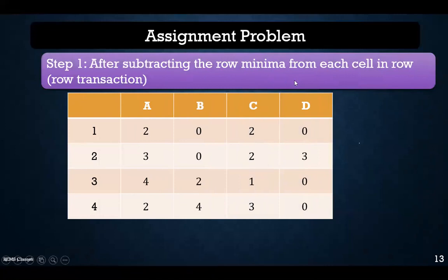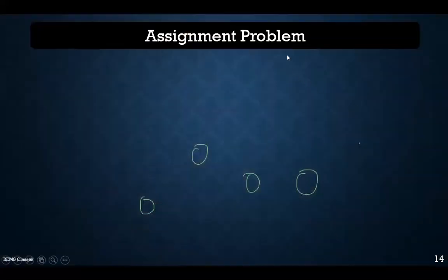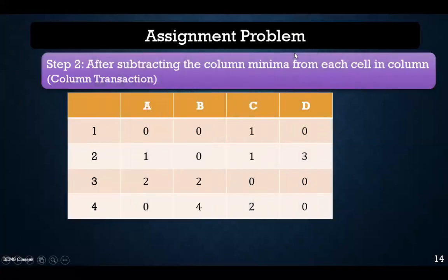After subtracting the row minimum from each cell, we obtain this particular matrix. Next, we find the column minima and perform the column transaction. For this column, the minimum value is 2; for the next column, it is 0; for the third column, it is 1; and for the fourth column, it is 0. We subtract the column minimum value from each cell in each column.